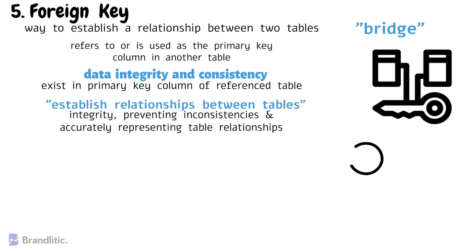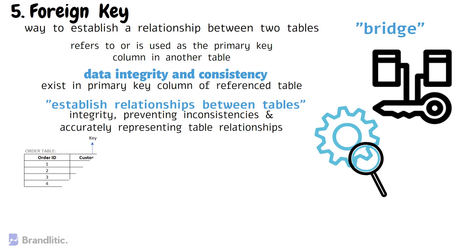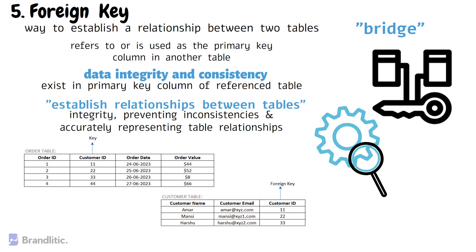Foreign keys are vital for maintaining data integrity, preventing inconsistencies, and accurately representing table relationships. They enable efficient querying and data retrieval in a database. For example, consider two tables: orders and customers. The orders table may have a foreign key column called customer ID that references the primary key column customer ID in the customers table. This establishes a relationship between the two tables, ensuring that an order can only be placed for an existing customer.